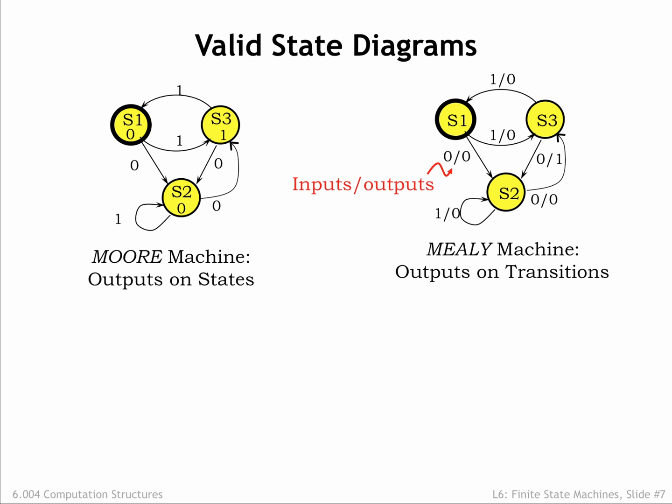So looking at the state transition diagram on the right, suppose the FSM is in state S3. If the input is a 0, look for the arrow leaving S3 labeled 0 slash. The value after the slash tells us the output value, in this case 1. If the input had been a 1, the output value would be 0.